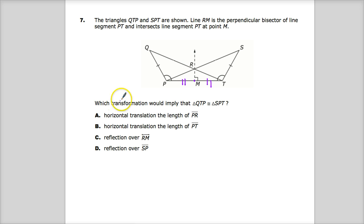Now, the question says which transformation would imply that triangle QTP is congruent to SPT? So congruence requires two requirements: that the corresponding angles are congruent, which means they have the same measures, and corresponding sides are also of the same measures. This isn't similarity, it's congruence. So I need to take a look and see what's already set up to be able to prove that that's true.